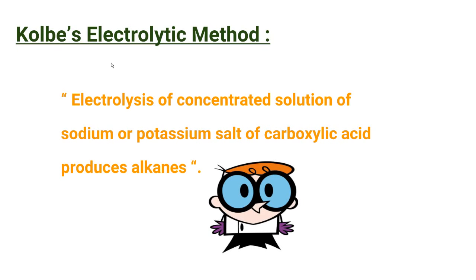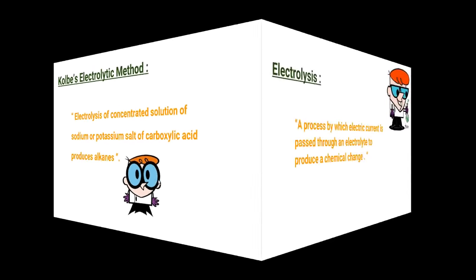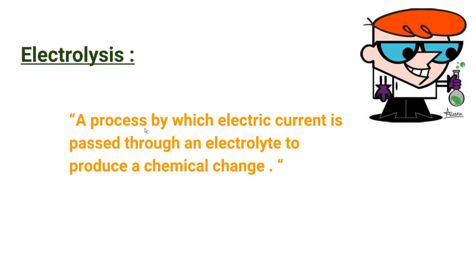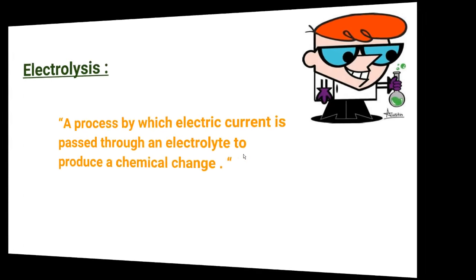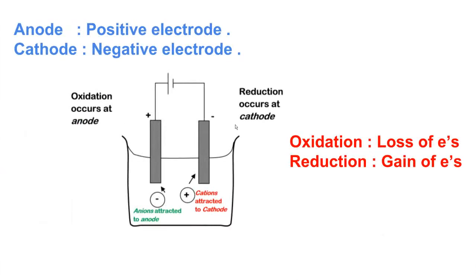Decarboxylative means there is a removal of a carbon dioxide molecule. Electrolysis of a concentrated solution of the sodium or potassium salt of carboxylic acid produces alkanes. Electrolysis is a process by which electric current is passed through an electrolyte to produce a chemical change. An electrolyte is a substance that dissociates into its respective ions when in solution or molten form, and can conduct electricity.